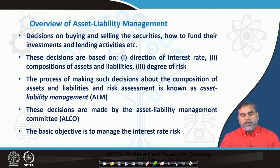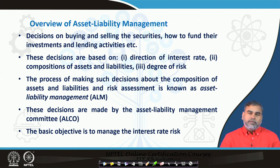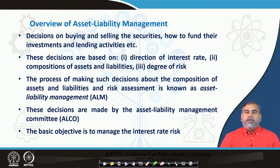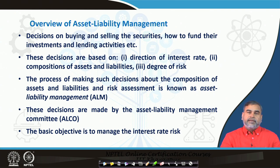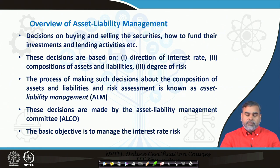Whenever decisions in terms of lending activities, deposit activities, and investment activities are made, every time the asset positions and liability positions get changed. So the bankers have to position themselves in such a way that their exposure towards risk will be relatively less, or if there are any fluctuations in market factors, they will be less exposed to those fluctuations, or they can hedge their risk better, or they will be well prepared to manage the risk. That process is basically called asset liability management.